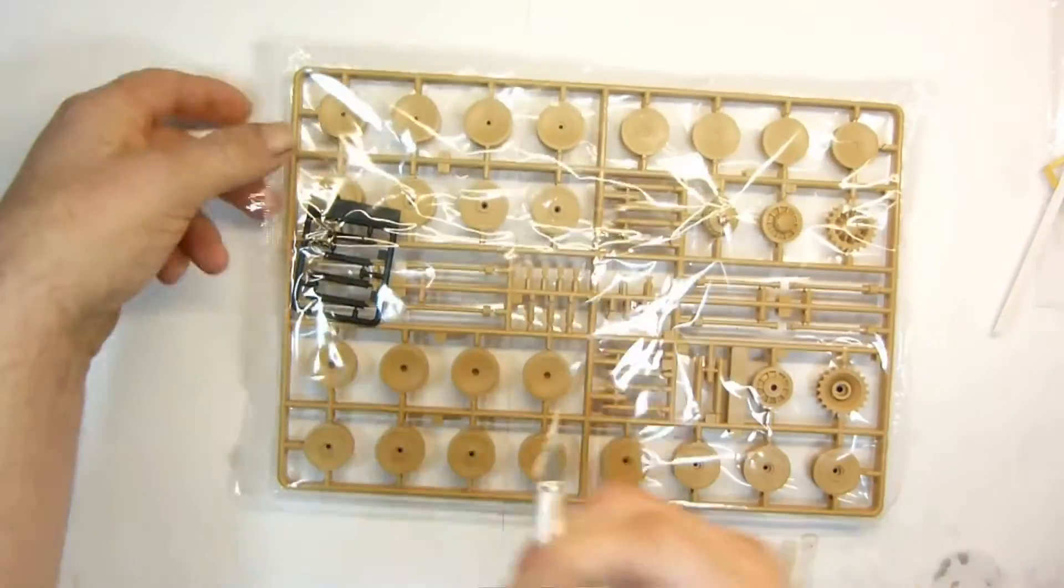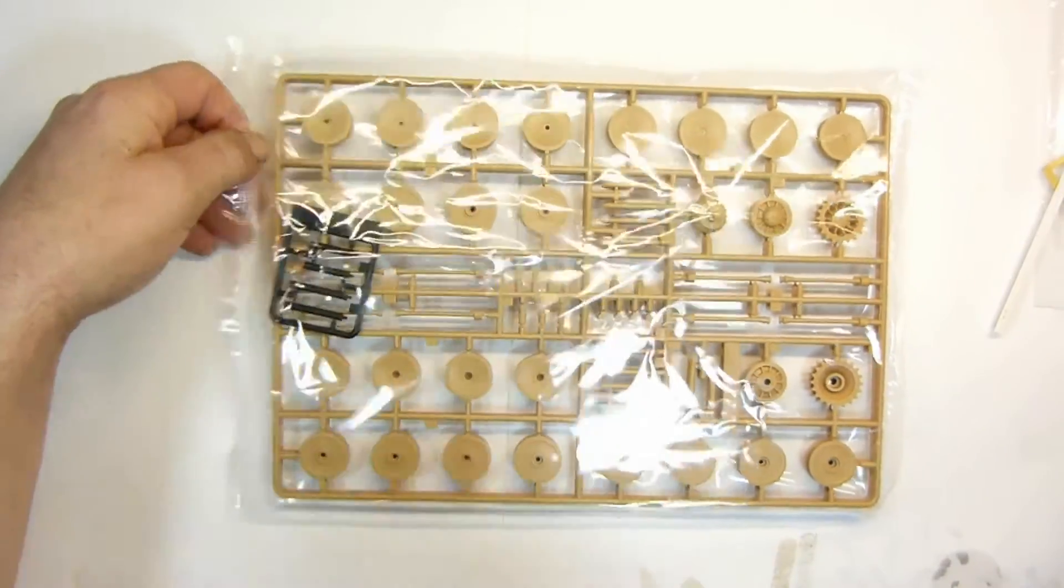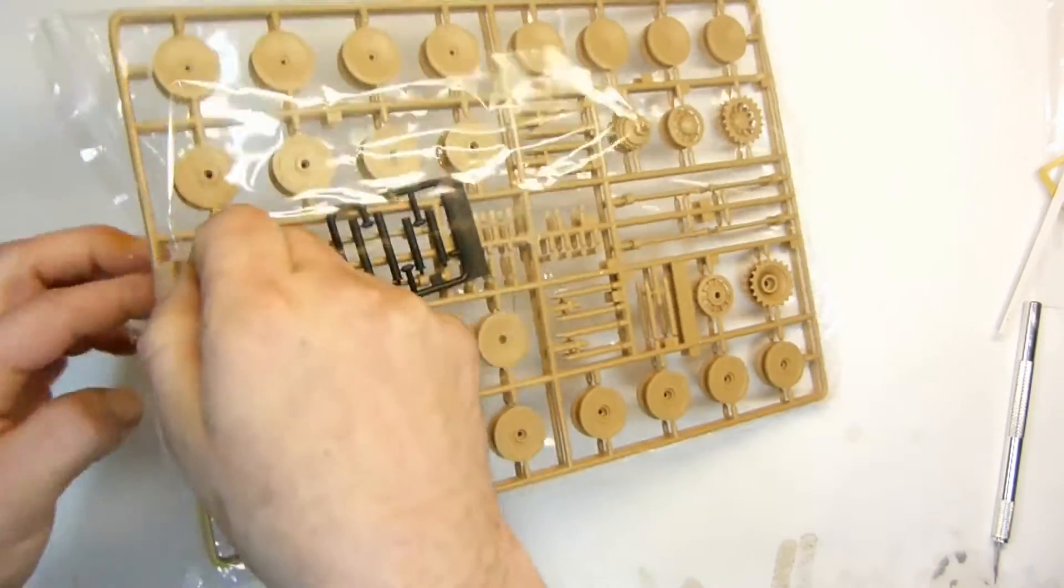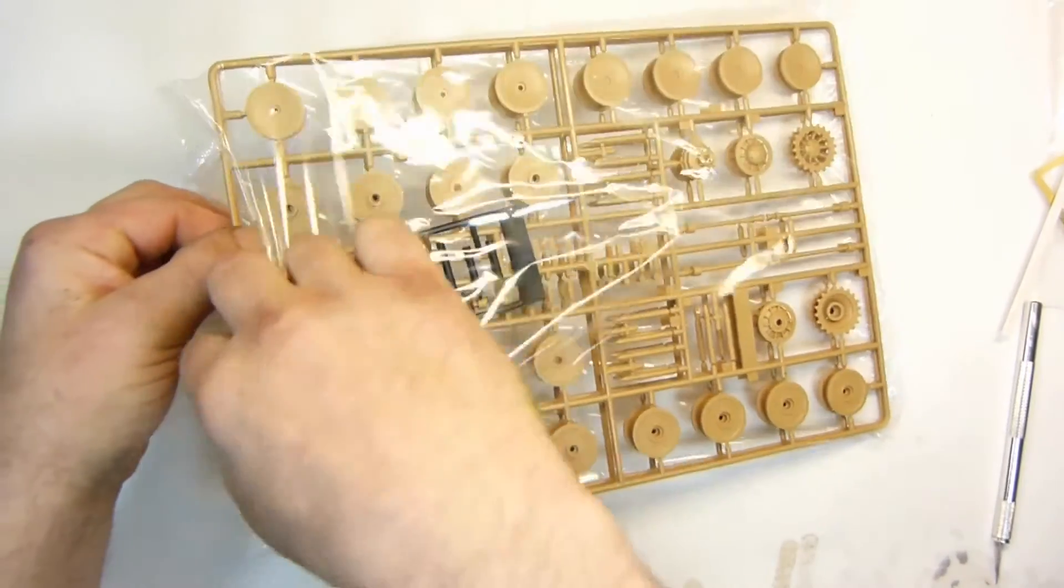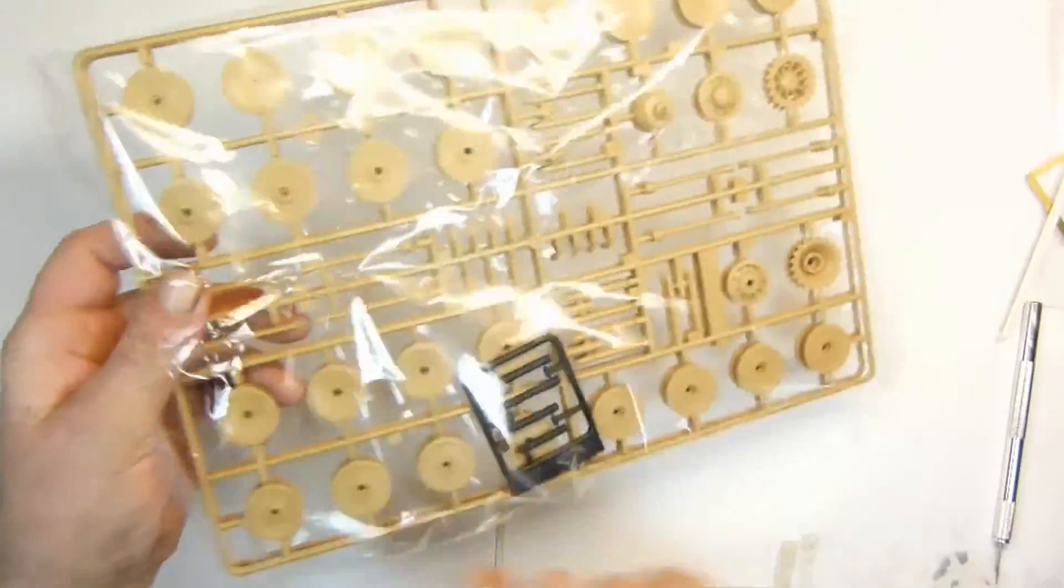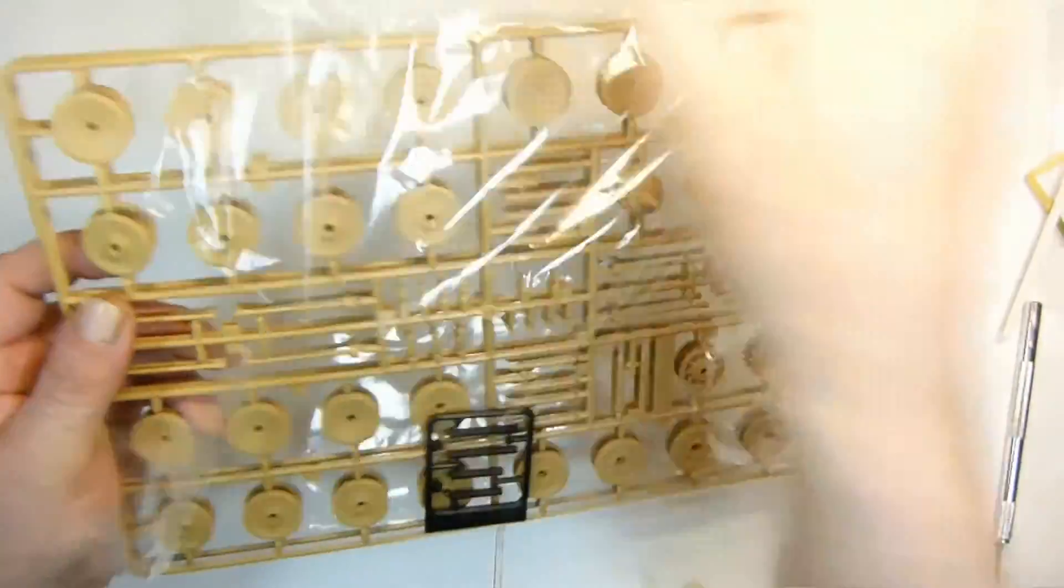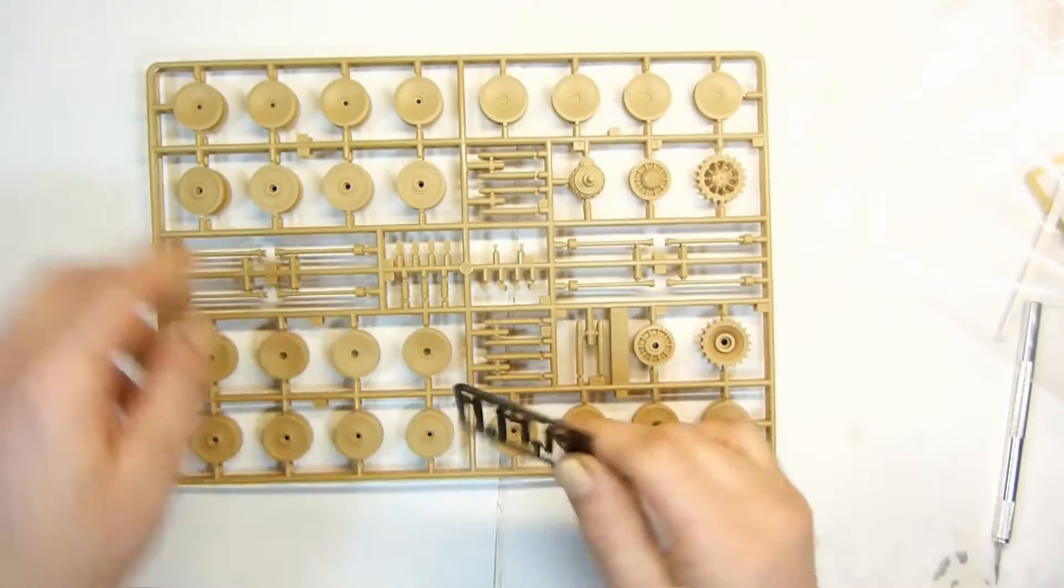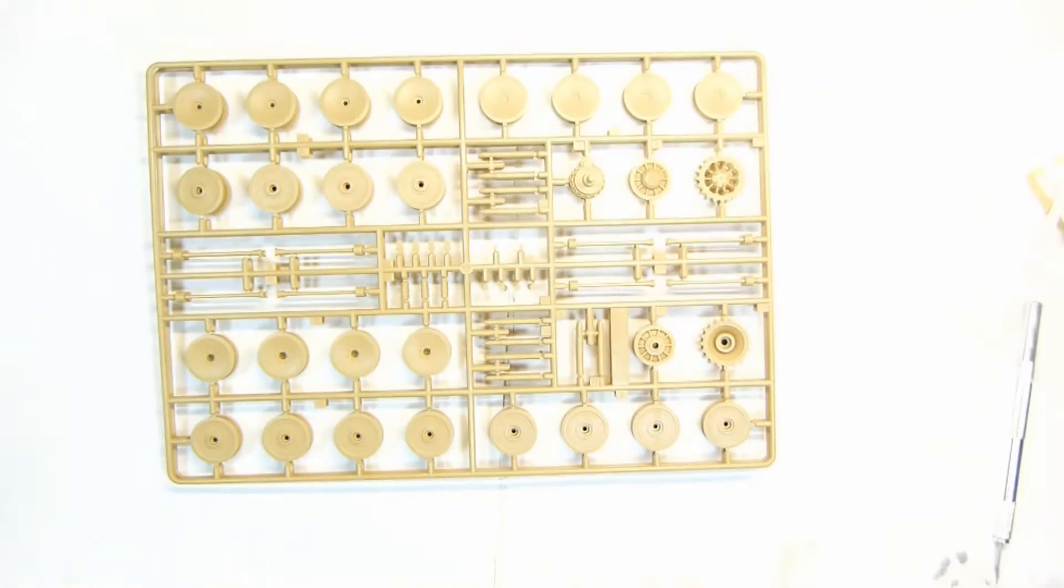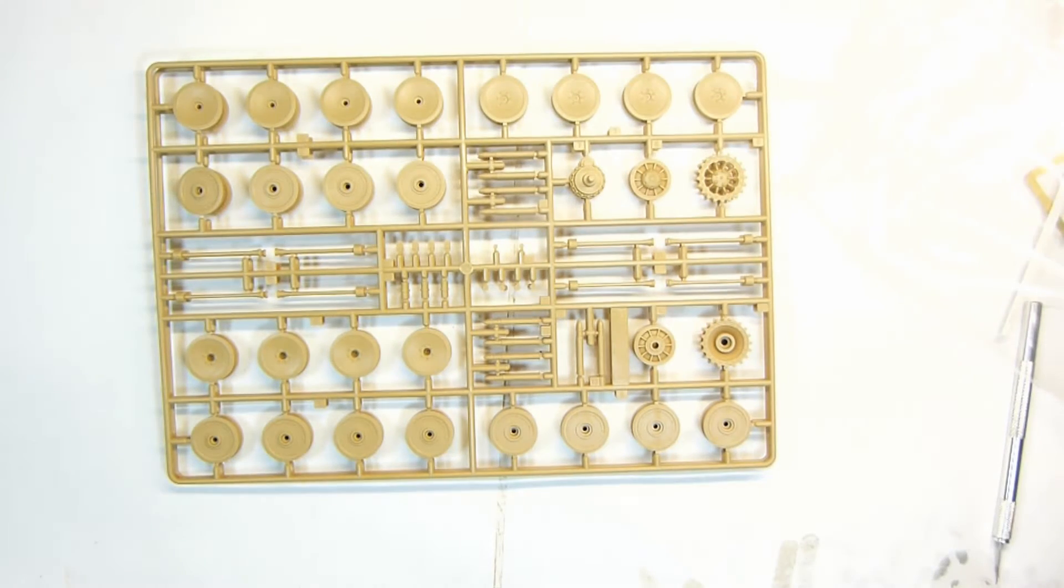But yeah, it's still a good kit, good value for money. Moving on to the sprues, I believe there's 11 plastic sprues in total, two duplicate sprues for A and E which is the suspension arms and the wheels. There's also a little rubber sprue for the air filters on the back.